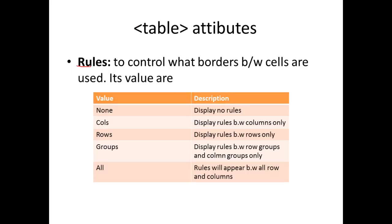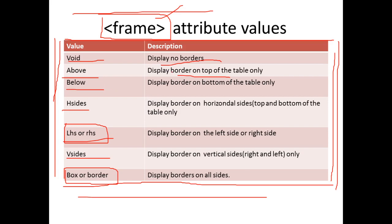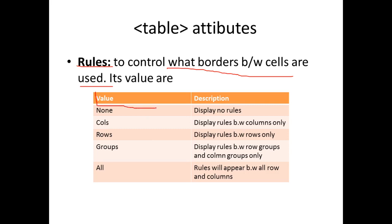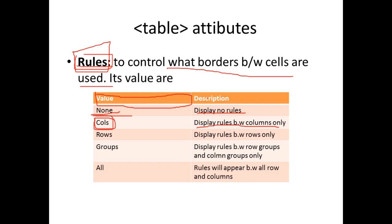The rules attribute is used to control what borders appear between cells. We use it to set a border in the middle between one cell and another. The values are: none — display no rules; rows — borders between rows; cols — borders between columns; groups — between row groups or column groups; all — rules will appear between all rows and columns.